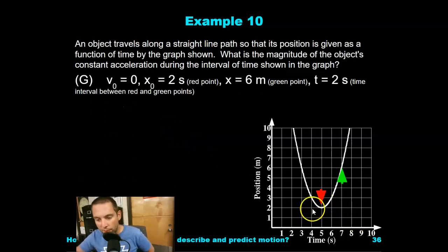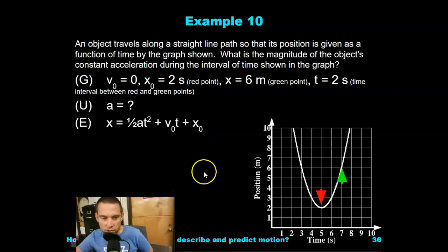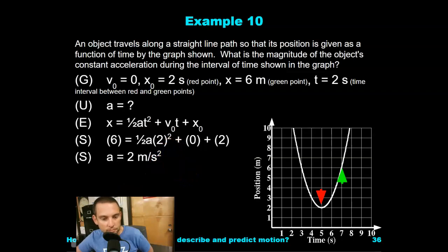So our given information, remember, the initial velocity is 0. Our initial position is 2 meters, not 2 seconds, typo. The final position is 6 meters and the time is 2 seconds. We're looking for acceleration. Again, using this equation, plugging in, and we are solving for a. Please don't just watch this. Please, try this. This is a difficult problem.